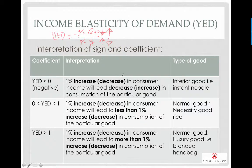Let's interpret this in words. If you are a student and your mom gives you lesser pocket money because you upset her, you have less money to spend this week. If you still want to upkeep your lifestyle — going out for movies — there are certain goods you have no choice but to consume more of. So instead of eating at a restaurant, you have to eat at a hawker center or eat instant noodles.